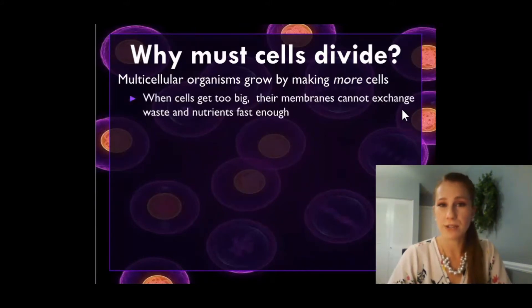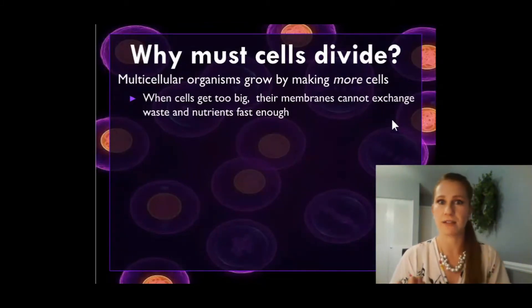When our cells get too big, our cell membranes can't exchange waste for nutrients fast enough. So when you get a cell that's too big, essentially it can't get enough food and water in and it can't get rid of enough waste. So it kind of starves and drowns in its waste all at the same time, which is not a good way to go.